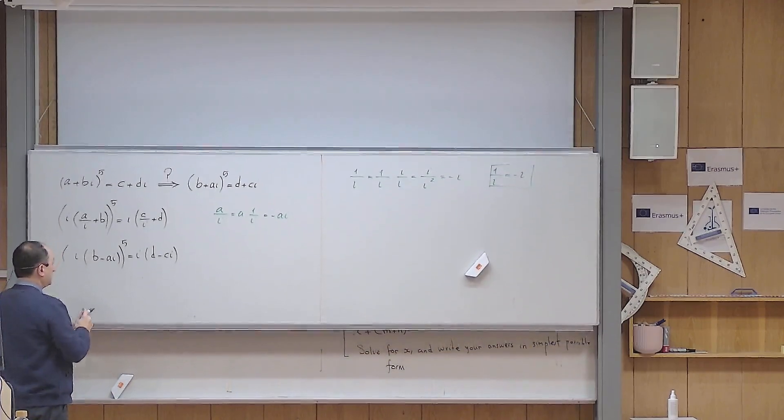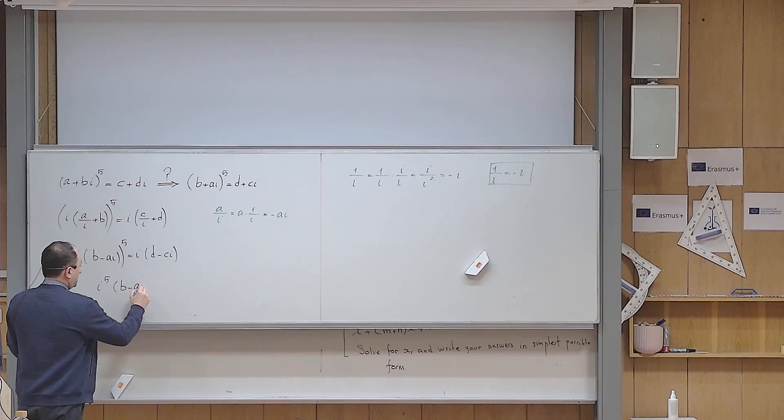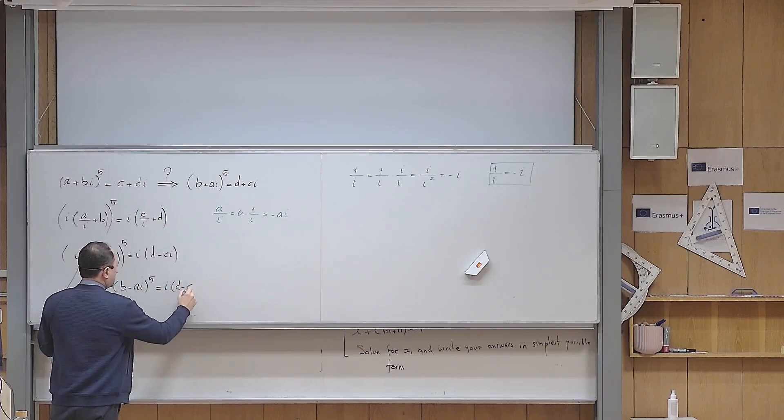So this is i to the power of 5 times (b minus ai) to the power of 5 equals i to the power of 5 times (d minus ci).